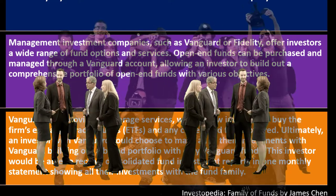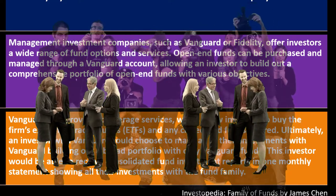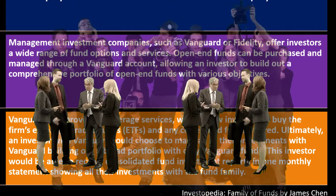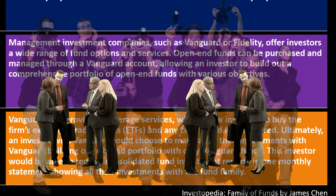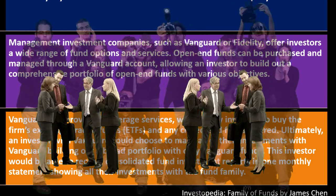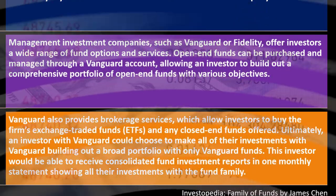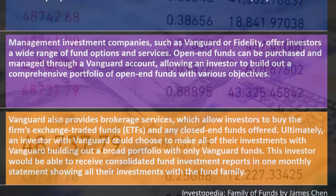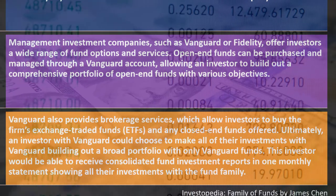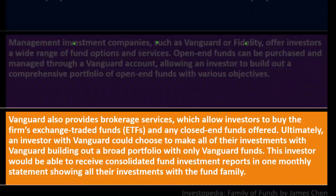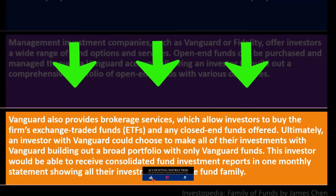This investor would receive consolidated fund investment reports and one monthly statement showing all their investments with the fund family. That's convenient because you can get broad diversification using one fund family and see all your holdings consolidated in one report. Within a platform like Vanguard, you still have the option of using one well-diversified mutual fund or multiple mutual funds to create your own optimal mix.